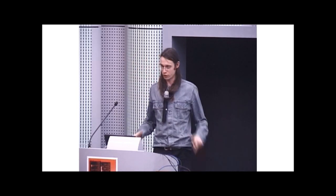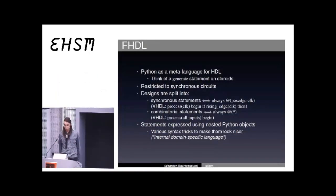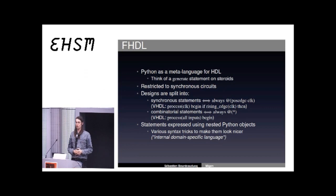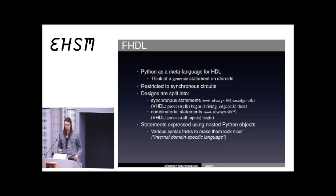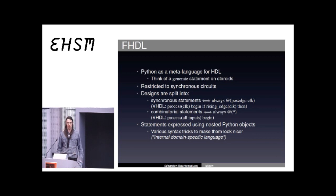To express the statements that you put into those statement lists, you are basically putting Python objects together. Putting Python objects together can lead very easily to a very ugly syntax, so there are lots of syntax tricks and hacks that I made into Python to make it look much nicer — so it reads almost like another language but it's actually parsed by the Python interpreter. That's what Ruby people call an internal domain-specific language.